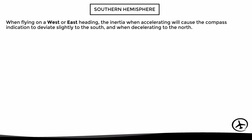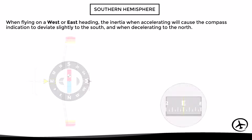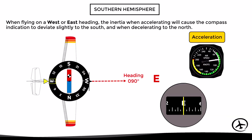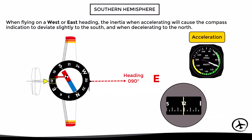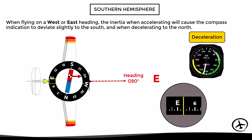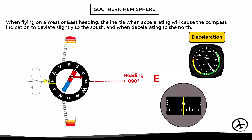In the southern hemisphere, when flying on a west or east heading, if the aircraft accelerates inertia will cause the compass indication to deviate slightly to the south, and if the aircraft decelerates the compass indication will deviate to the north. For example, with an aircraft flying east at heading 090, the magnet has its center of gravity shifted to the red side due to magnetic dip. If the aircraft accelerates, inertia will pull the magnet's center of gravity backward, causing a false turn indication to the south, although the aircraft is still flying on the same heading. Once acceleration finishes and constant speed resumes, the inertia disappears and the compass returns to the correct indication. On the other hand, if the aircraft decelerates, inertia pulls the center of gravity forward, causing a false turn indication to the north.